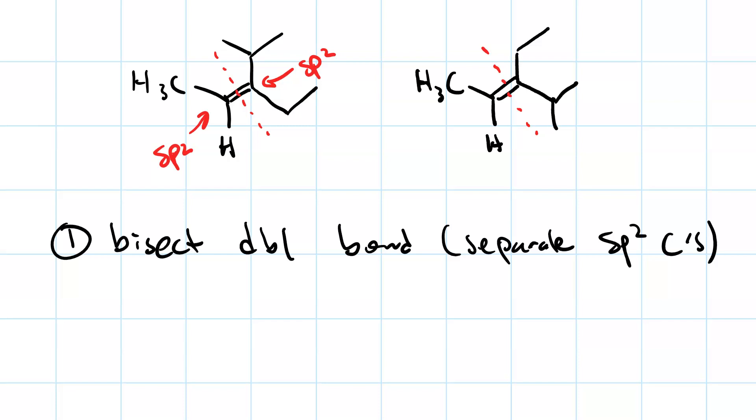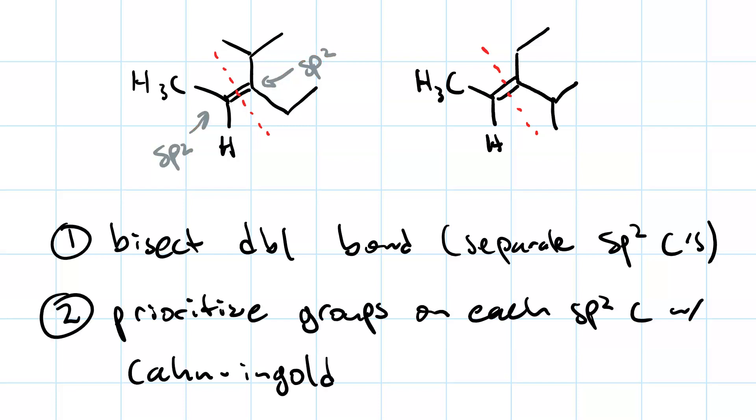Now, on each one of those sp2 carbons, you're going to prioritize the groups using the Cahn-Ingold-Prelog system. For the carbon on the left, methyl beats hydrogen. For the carbon on the right, isopropyl beats ethyl.